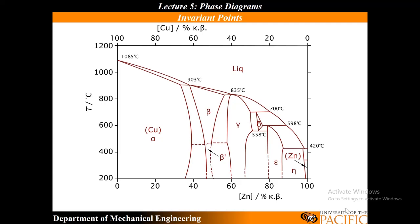Let's label each region on the phase diagram. I have a liquid phase region here. There's an alpha phase on this side, so the region between them is liquid plus alpha — that's the liquidus line and solidus line. The region between alpha and beta is alpha plus beta. On the other side we have alpha plus beta prime, then beta prime, then beta plus gamma, then beta prime plus gamma.